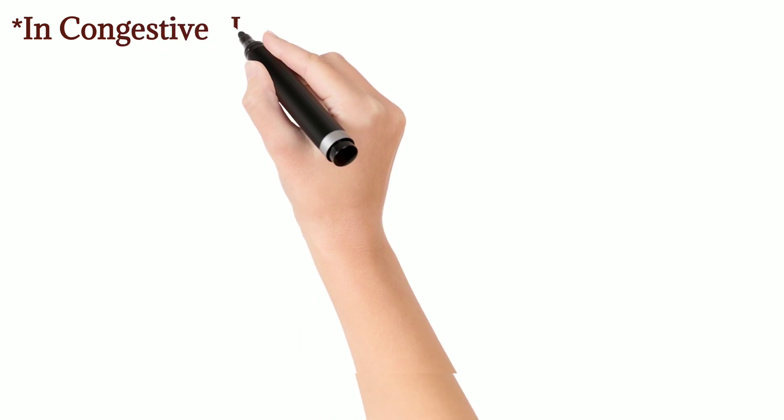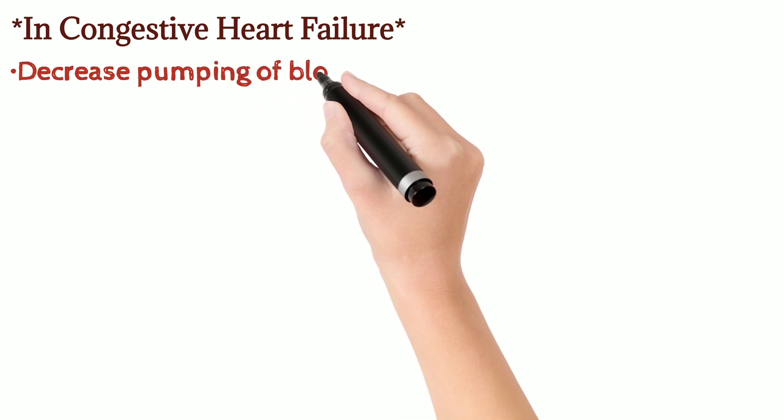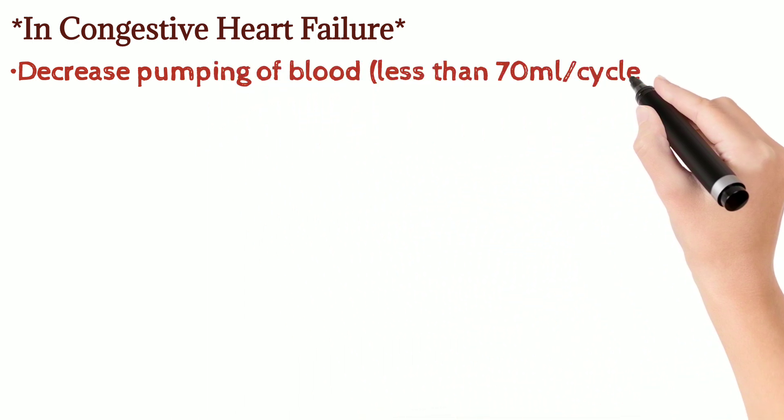What happens in congestive heart failure is that there is a significant drop in the blood pumped out by the heart, below the normal 70 ml per cycle.